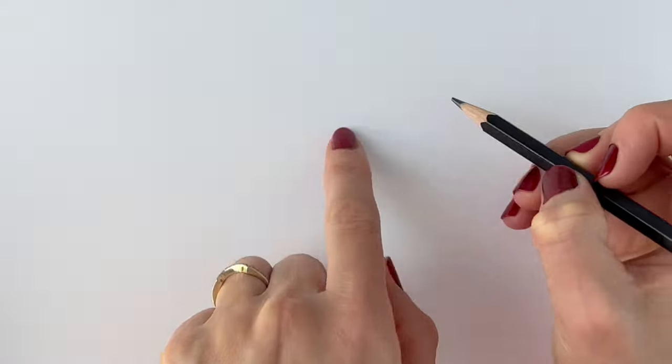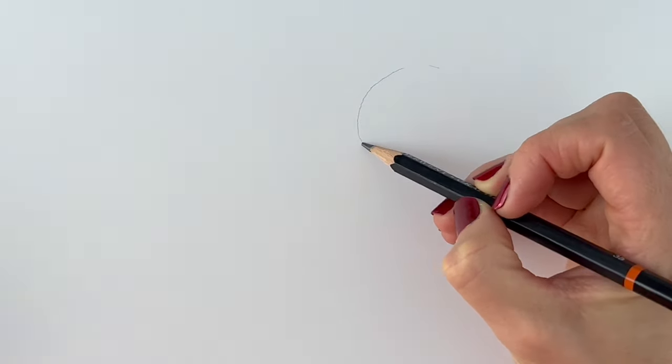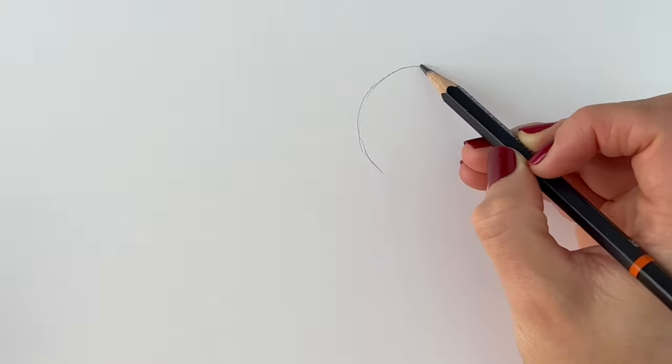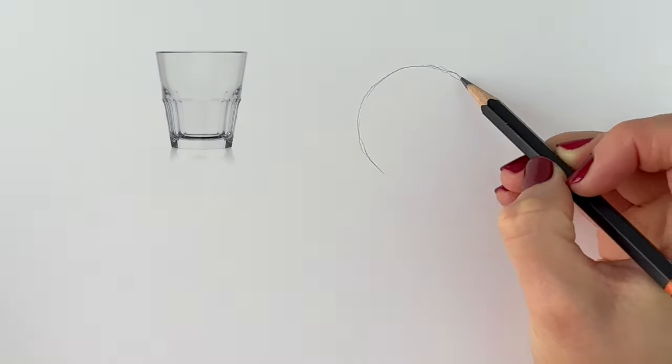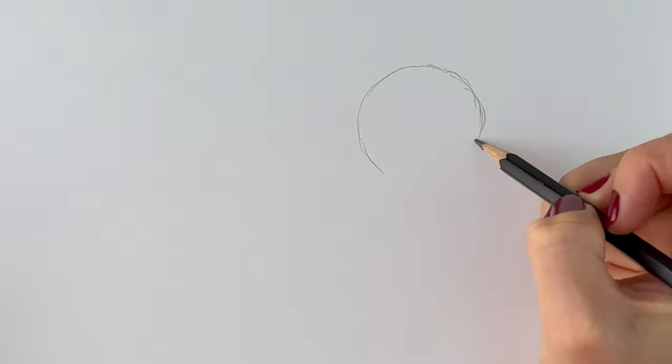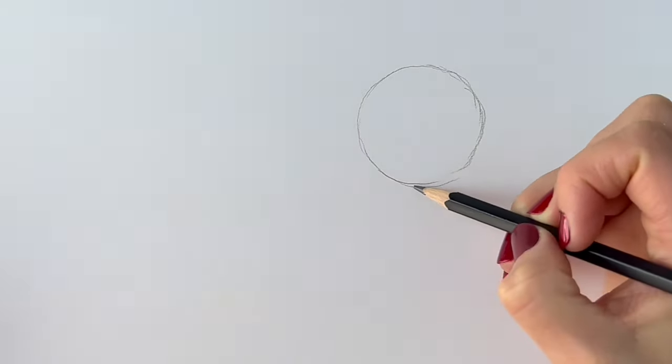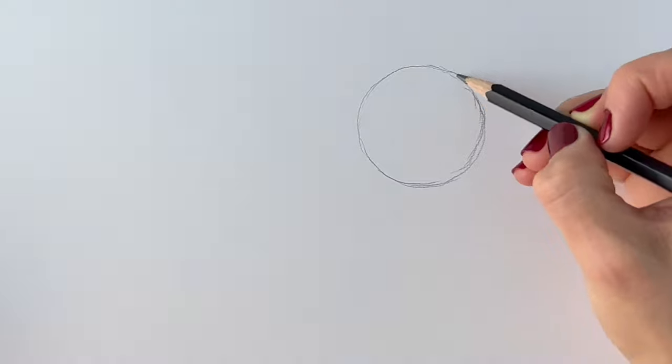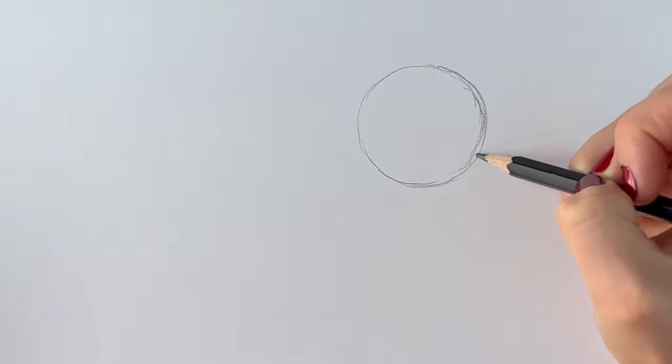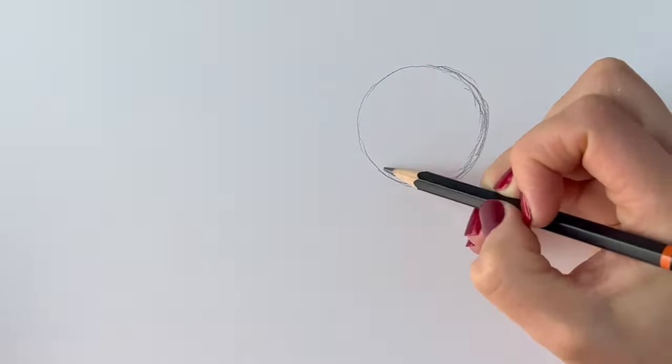We're going to start off our Old English Sheepdog with a circle which is going to be the head. Just a rough circle, draw it very lightly in pencil. You can draw around something like a glass or a large coin or anything that you can find that's round, or if you like you can do my tutorial on how to draw a circle freehand which I'll put a link in the description below. So there we go, that's my very rough circle, just something like that.